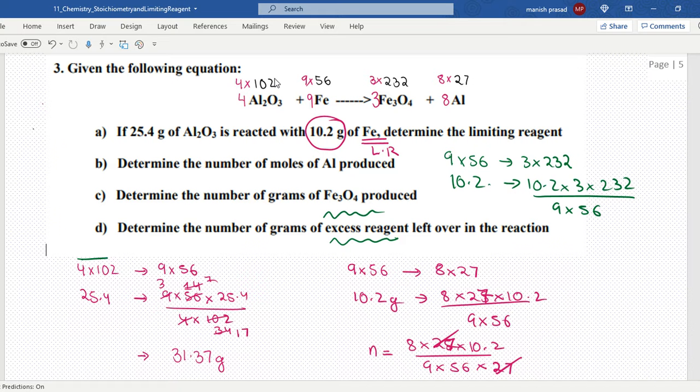For excess reagent, 9 into 56 requires 4 into 102. Please do not do the calculations like this - your teachers require your statements, so please write the statements. And then this is 10.2 grams would give us how many. This answer we will subtract from whatever is given, so 25.4 minus x will give us the fourth answer.